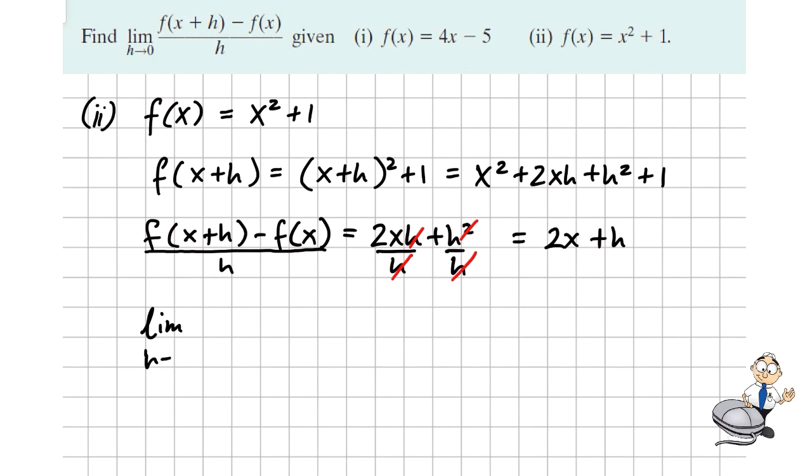And lastly, we want to write out what our limit is as h goes to 0 of this expression. So the 2x is not affected by h, but the h goes to 0. So the answer is just 2x. So the derivative of f of x is 2x. That's from first principles.